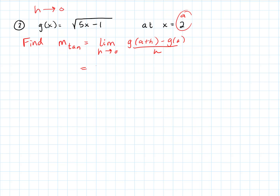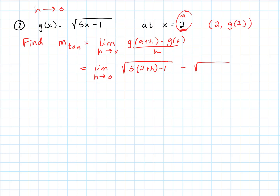So this is going to be the limit of the square root of 5 times (2 plus H) minus 1, under the root, minus g of 2. I didn't have an ordered pair here, only the value of x, so I plug in: 5 times 2 minus 1 gives the square root of 9 — and that's 3. So g of 2 equals 3. This is all over H. If you're not given the full ordered pair, just plug the a value in to find the corresponding y value.